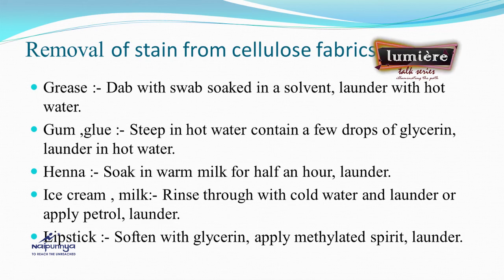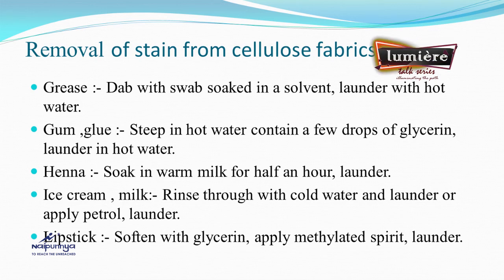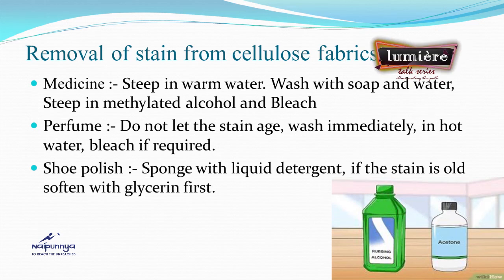For gum or glue stains: steep in hot water containing a few drops of glycerin — glycerin will soften the stain — then launder in hot water. For henna: soak in warm milk for half an hour, then launder. For ice cream and milk stains: rinse with cold water and launder, or apply petrol then launder again to remove the smell. For lipstick: soften with glycerin, then apply methylated spirit, then launder. For medicine stains: steep in warm water, wash with soap and water, then steep in methylated alcohol and bleach.